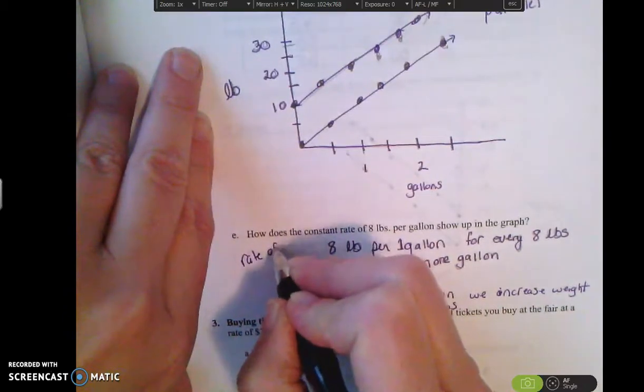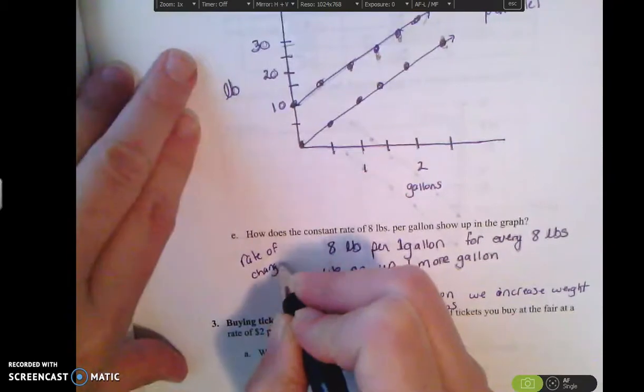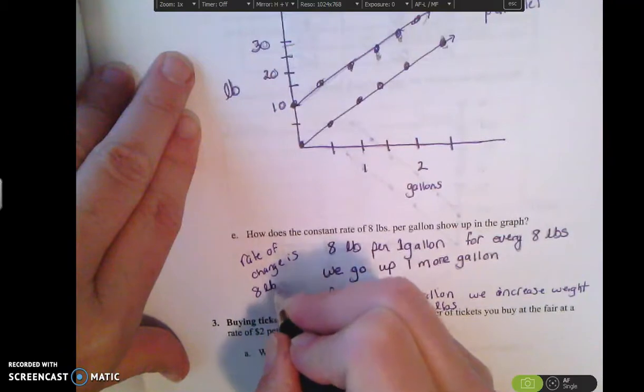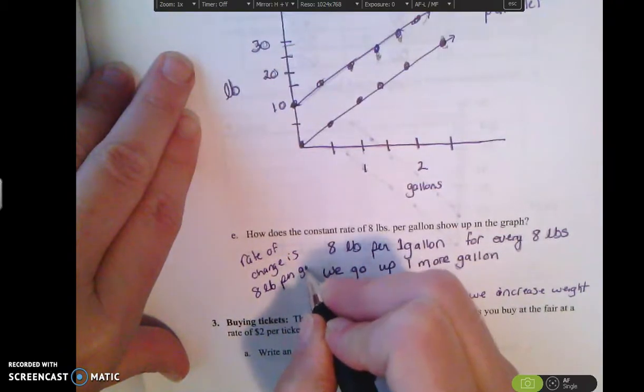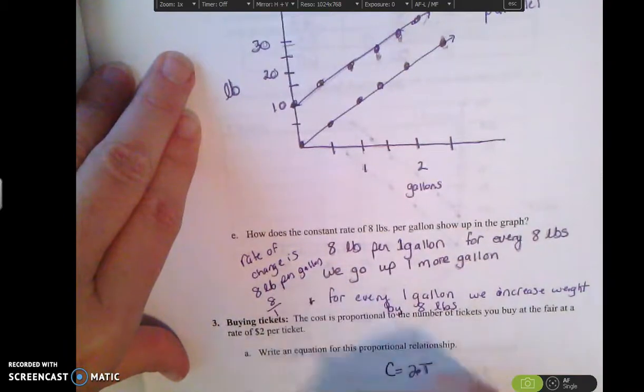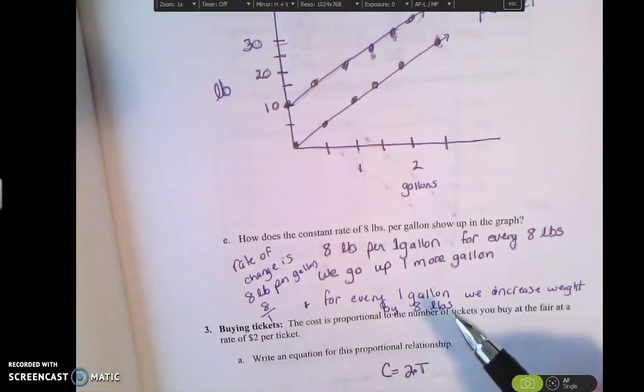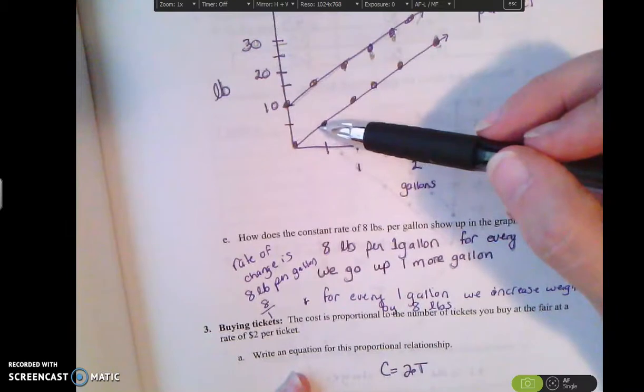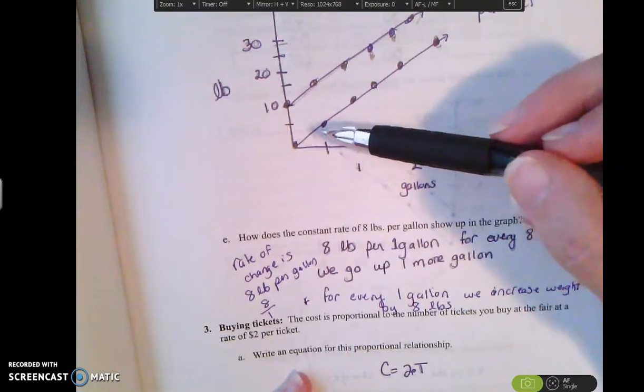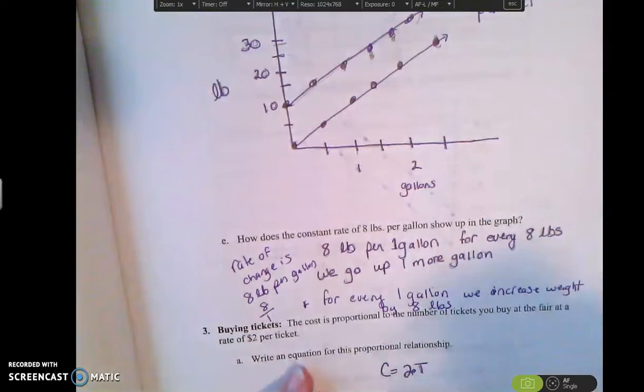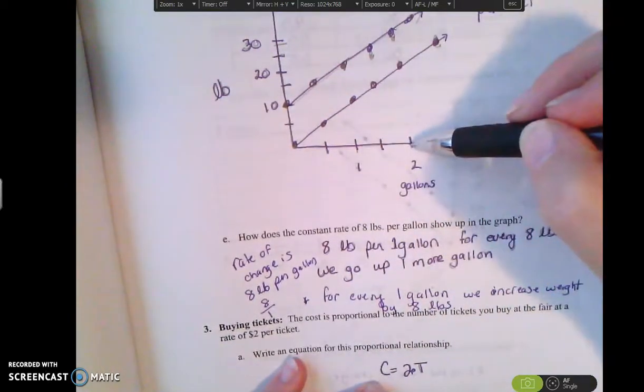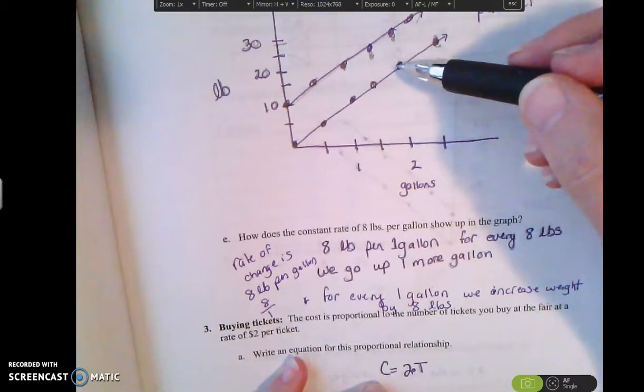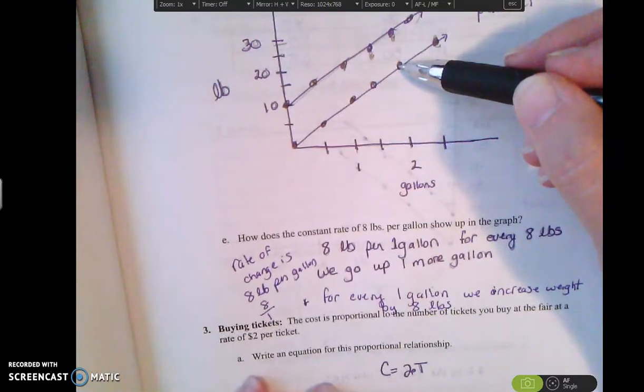The rate of change is 8 pounds per gallon. So that would be written 8 over 1. So that's what we refer to as the rate of change. That's the rise over the run. So that means that I went up 8 over 1 for every 1 gallon. So here to go from gallon 1 to gallon 2, I went up from this point, I went up 8 and over 1 to get to the next point.